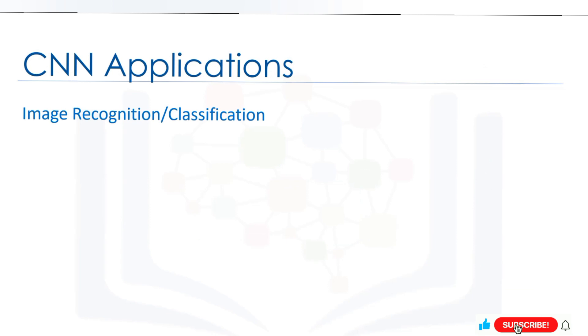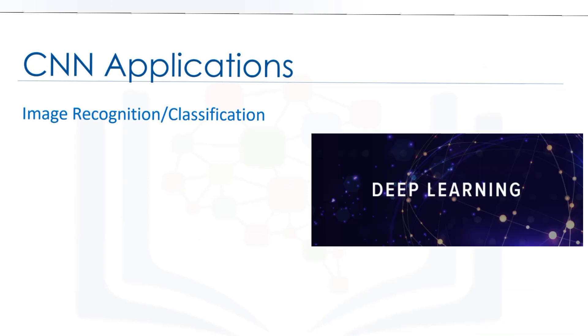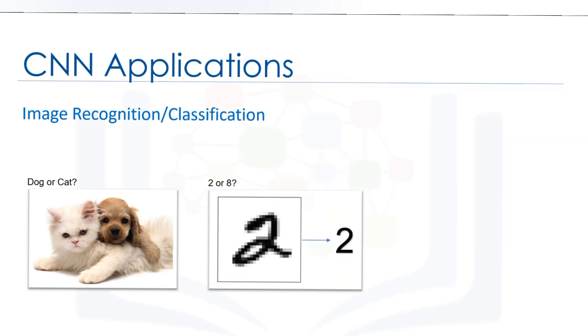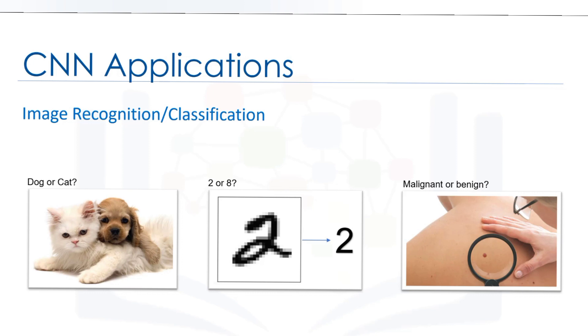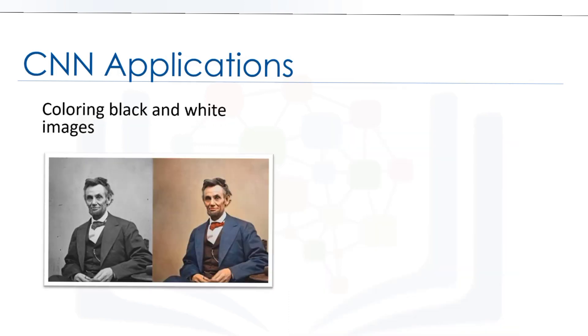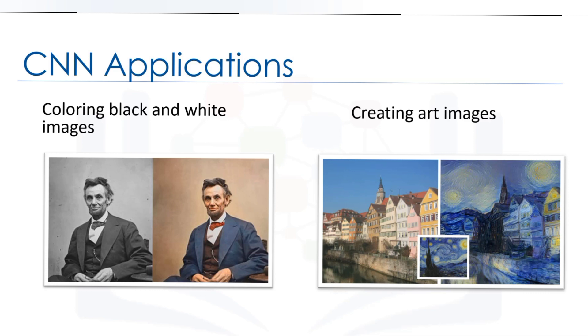CNNs have gained a lot of attention in the machine learning community over the last few years. This is due to the wide range of applications where CNNs excel, especially machine vision projects, including image recognition or classification, such as distinguishing animal photos or digit recognition to skin cancer classification. CNNs are also used in object detection, for example, real-time recognition of passengers in images captured by self-driving cars, or coloring black and white images and creating art images.